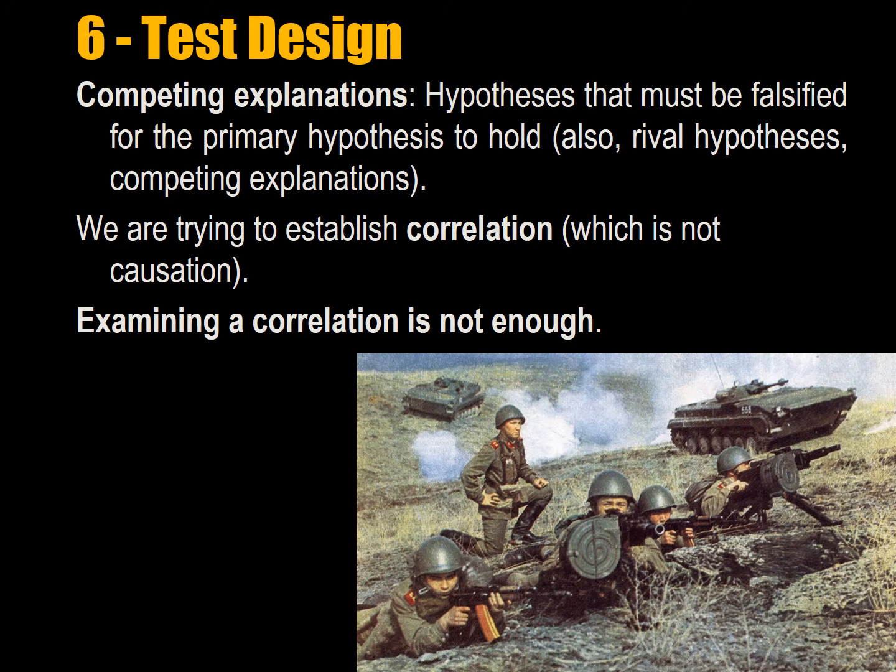Step six is test design. We have competing explanations developed through the literature review, and we've proposed a better explanation with our own theory. Hypotheses must either be falsified or put into competition with one another to see which provides the best prediction and explanation. What we're trying to establish is correlation: as one variable changes value, it has an effect that changes the value of the outcome. This is not the same as causation — correlation is an association of movements in variable values, while causation shows that one thing causes another. Explanation is how we show causation; prediction is how we show correlation.